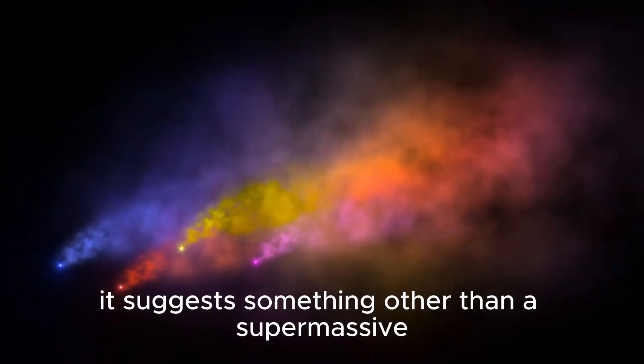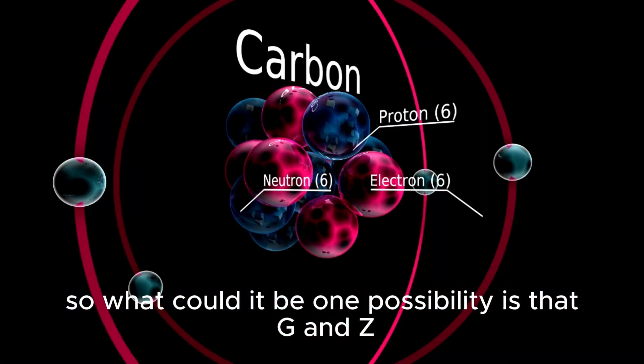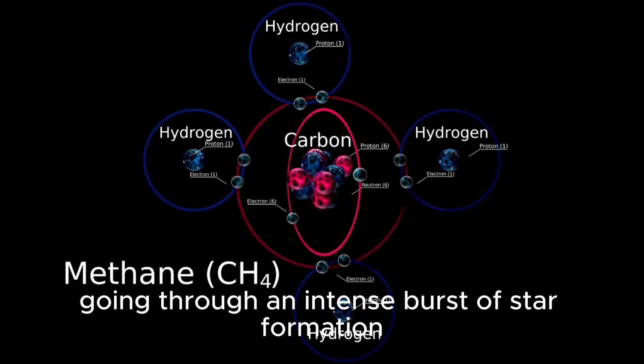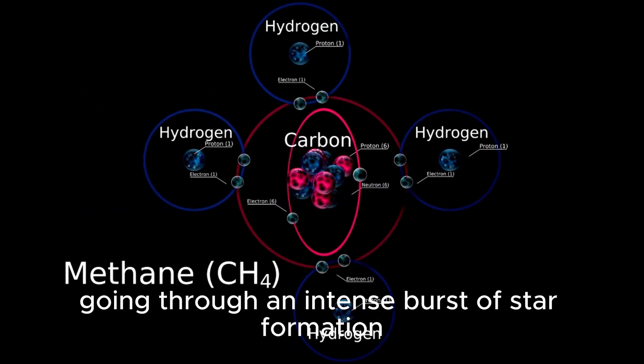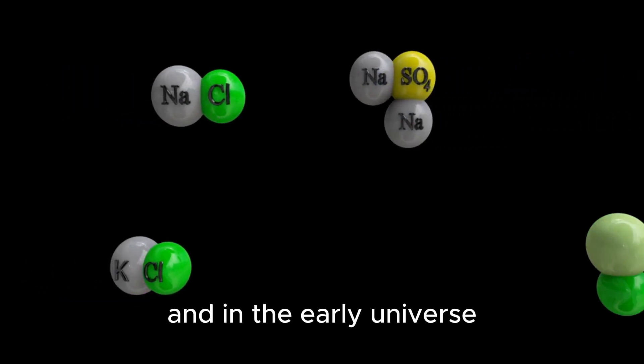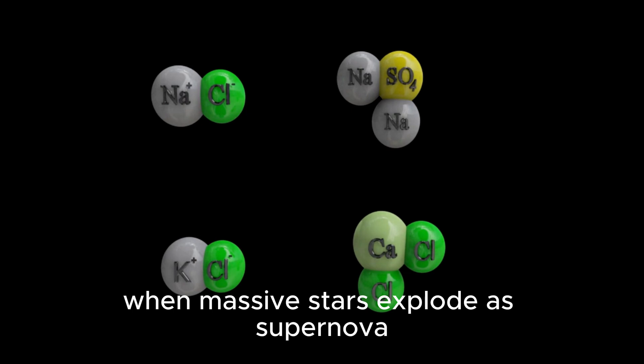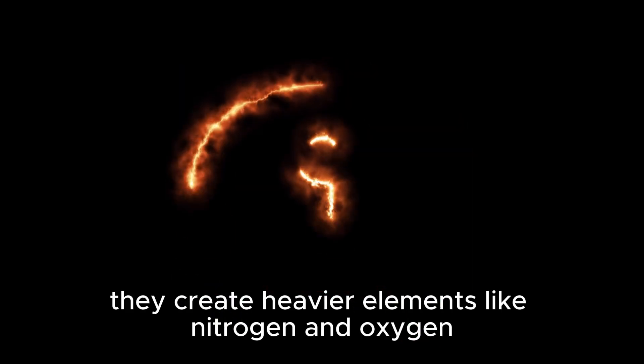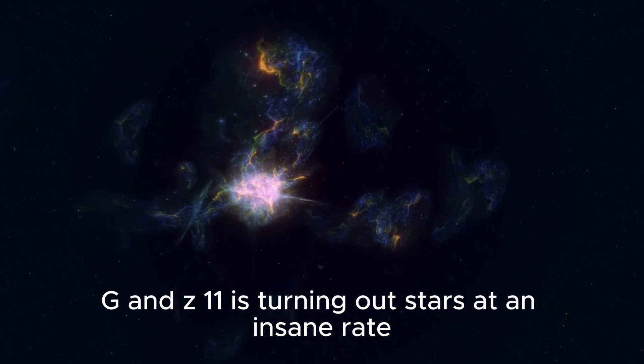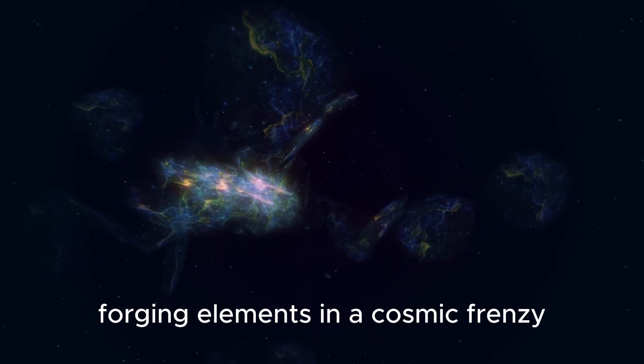It suggests something other than a supermassive black hole might be at play here. So what could it be? One possibility is that GNZ-11 isn't being torn apart by a ravenous black hole, but instead going through an intense burst of star formation. Stars form from collapsing gas clouds, and in the early universe, these clouds were almost pure hydrogen and helium. When massive stars explode as supernovae, they create heavier elements like nitrogen and oxygen. A weirdly high nitrogen ratio could mean GNZ-11 is churning out stars at an insane rate, with supernovae going off left and right, forging elements in a cosmic frenzy.